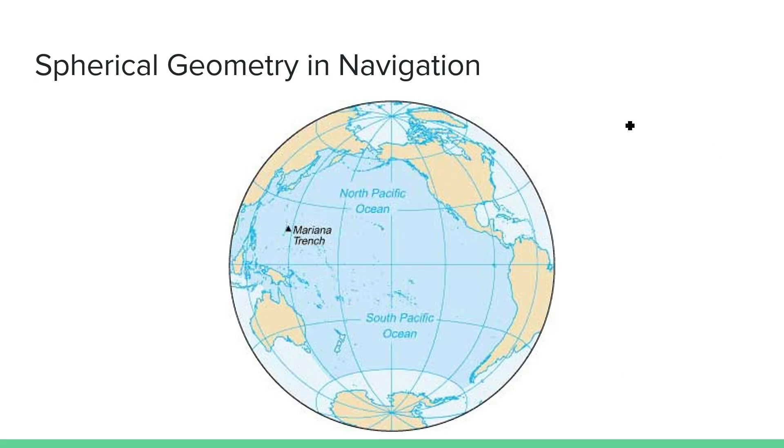Let's now return to our air travel example from the beginning of the video. In spherical geometry, the shortest distance between two points on a sphere is along the great circle connecting them. Since the Earth is just a giant sphere, this means that the shortest path between two cities isn't always as it seems.